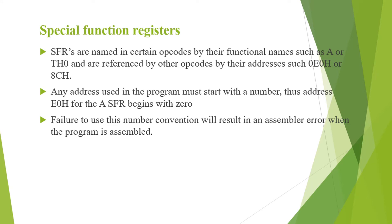The address for the special function registers used in the program should start with a number. Hence the address E0H for accumulator A begins with 0, so it is written as 0E0H. If this number convention is not used, the program will encounter an assembler error when it is assembled.